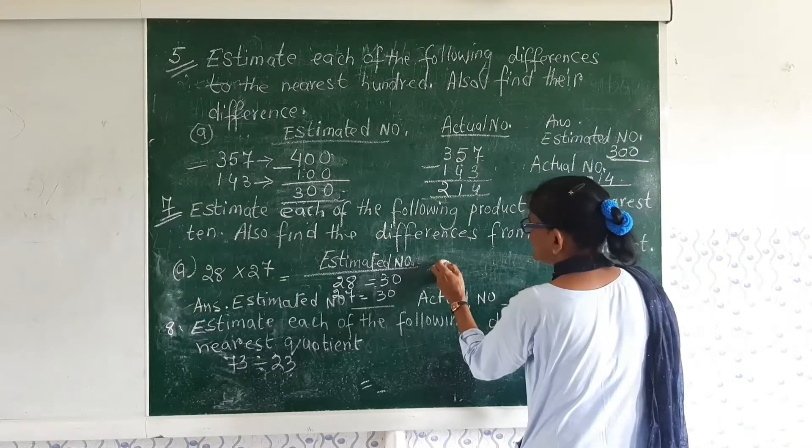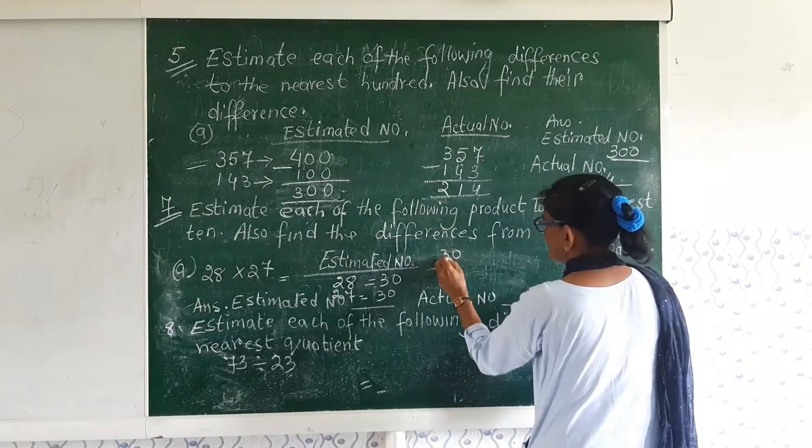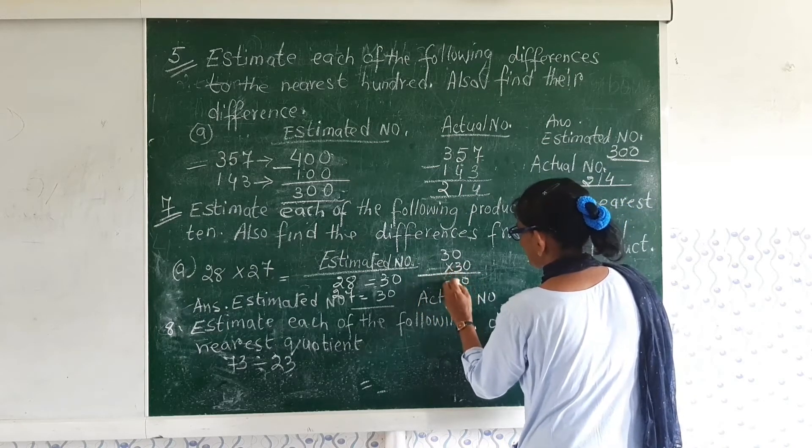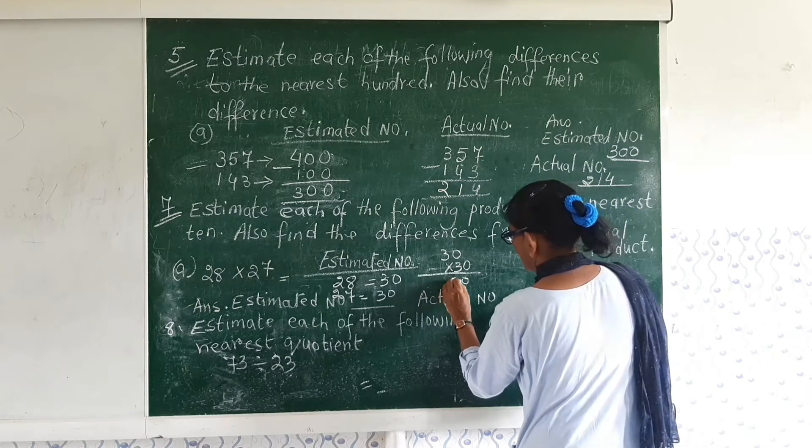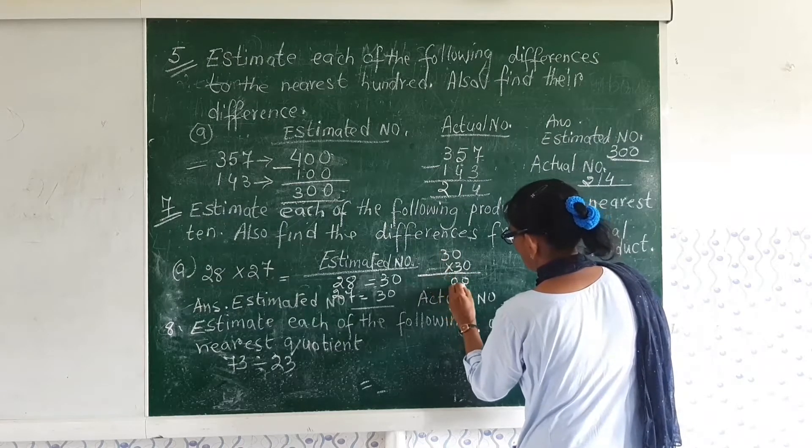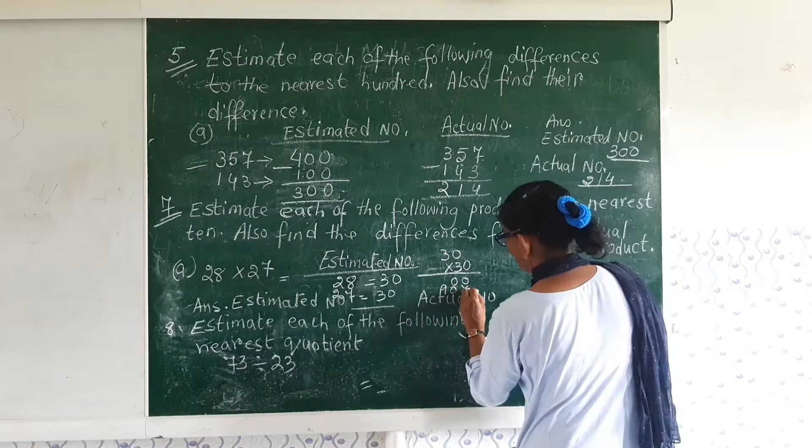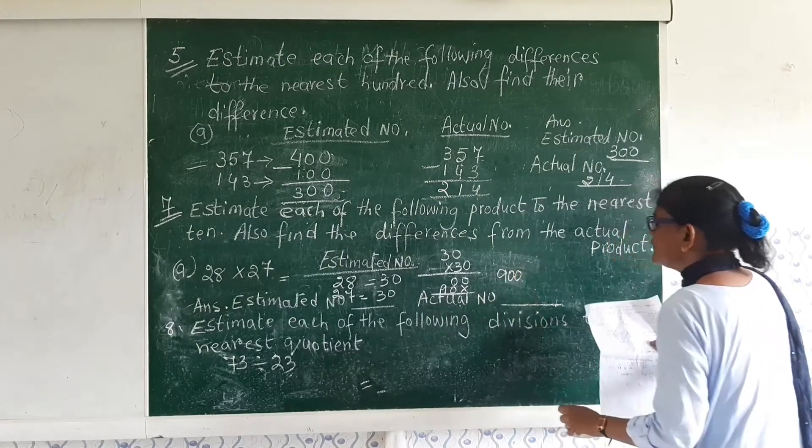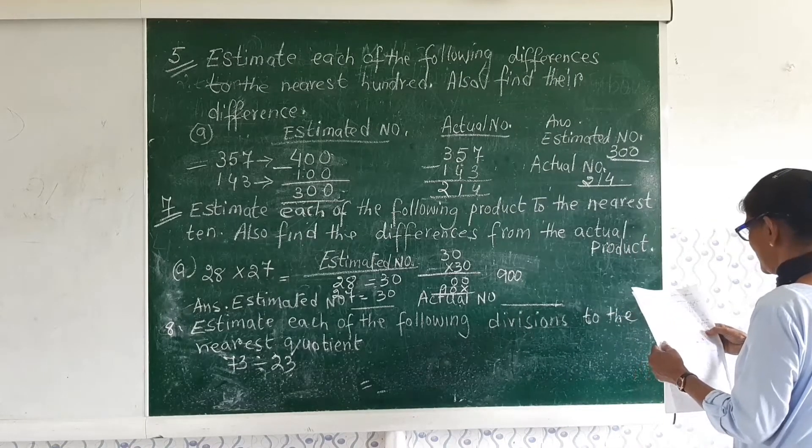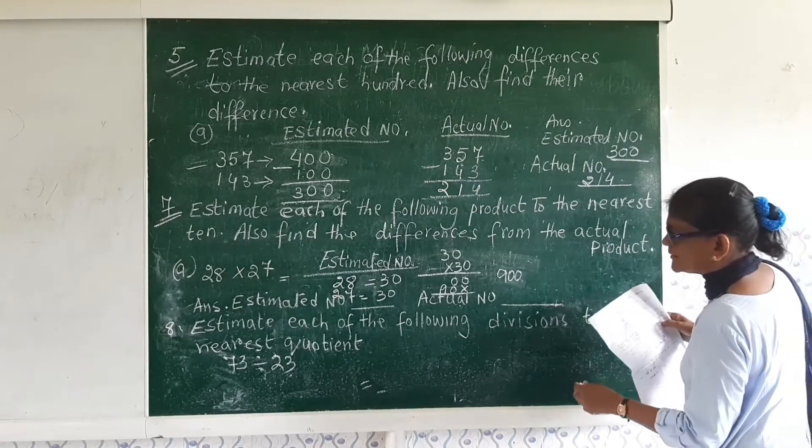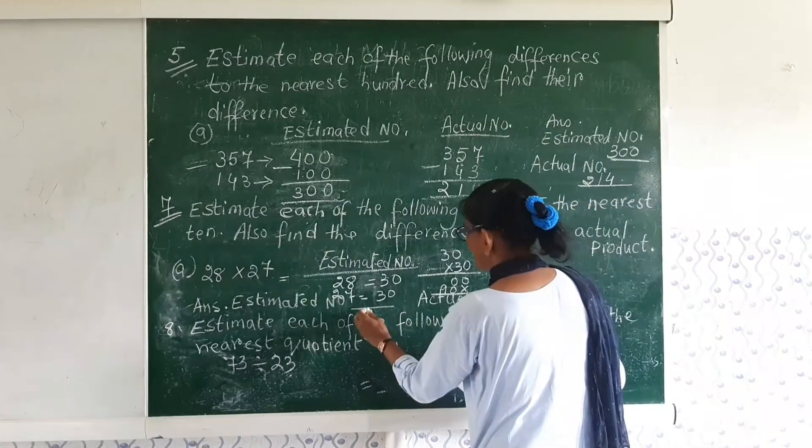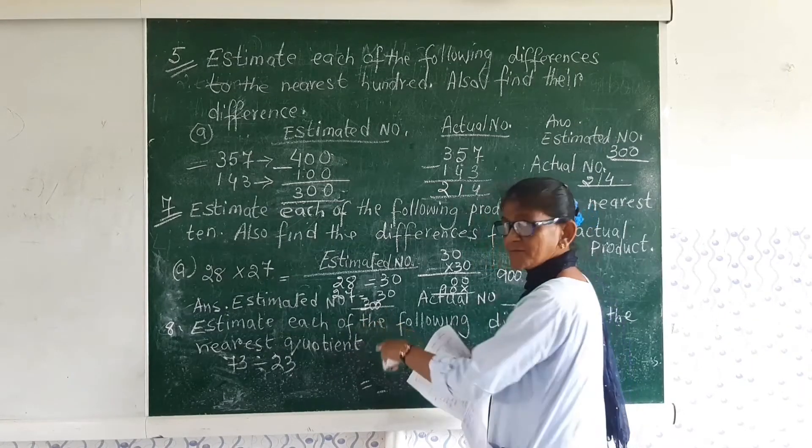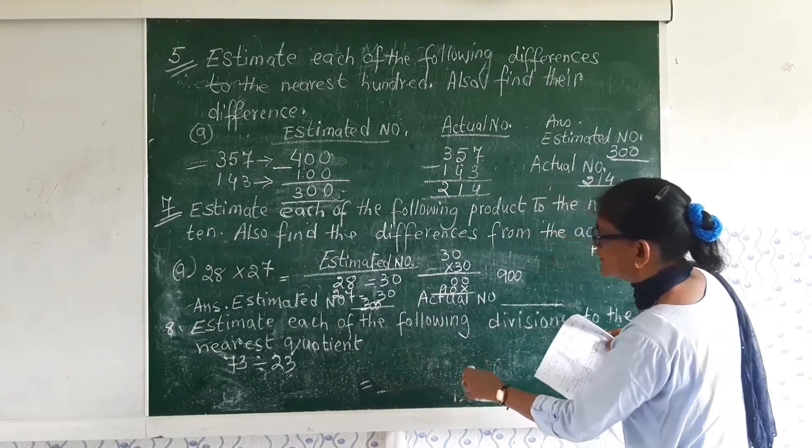And 27 will turn into 30. So now let us multiply 30 into 30, which turns to 900. So now let us see the actual number is how much. Estimated number is 900.